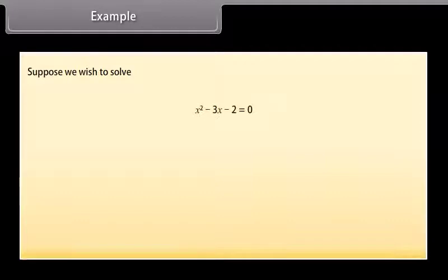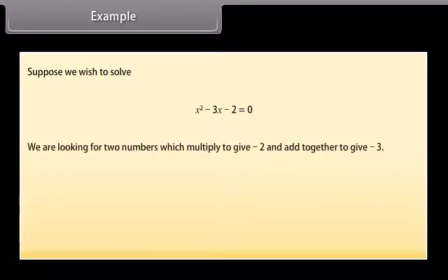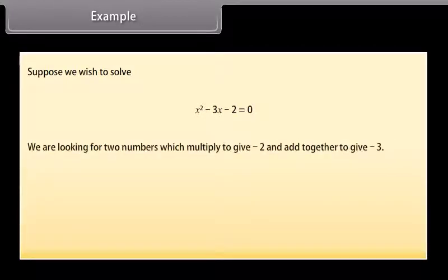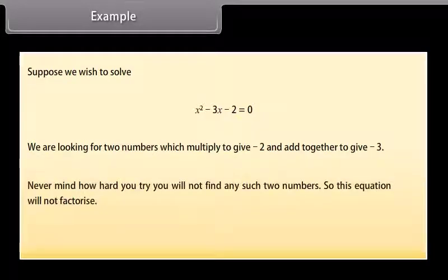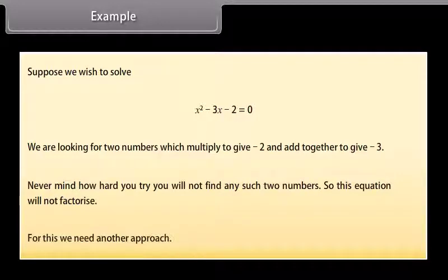Suppose we wish to solve x² − 3x − 2 = 0. We are looking for two numbers which multiply to give −2 and add together to give −3. No matter how hard you try, you will not find any such two numbers, so this equation will not factorize. For this we need another approach, which we will learn in the next screen.